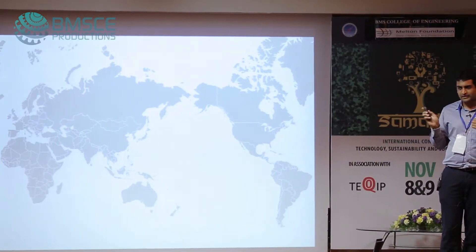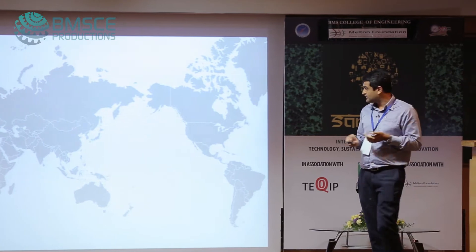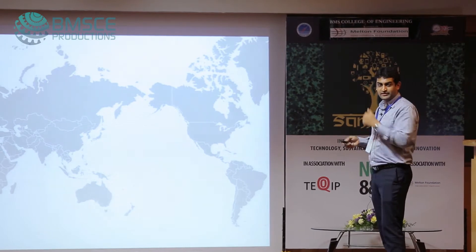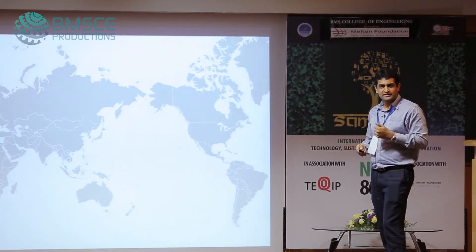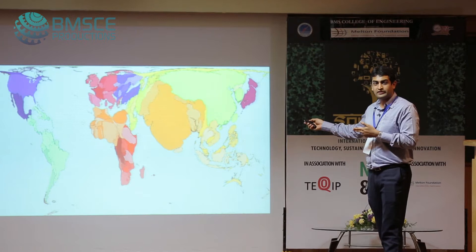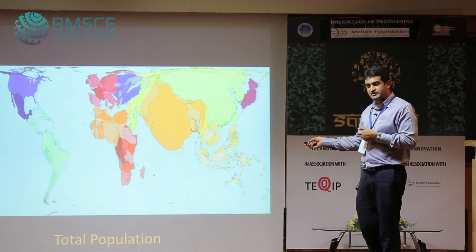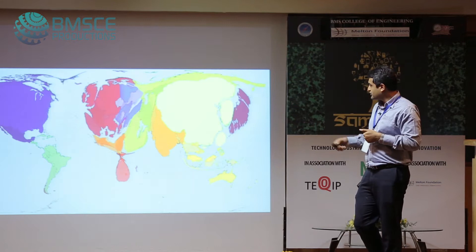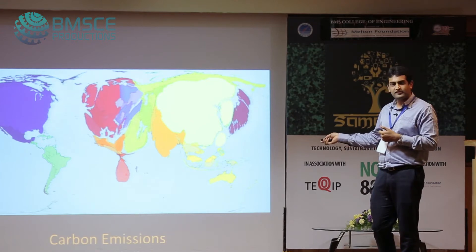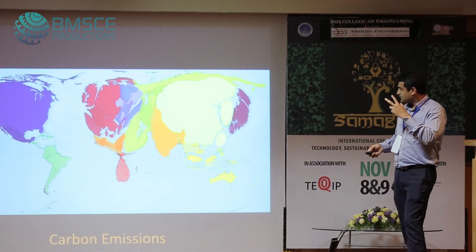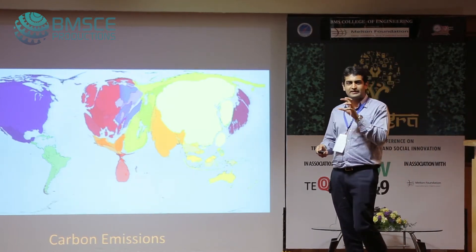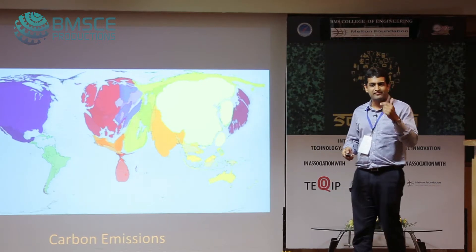This is the world map — it looks so nice when you see it, and many people want to travel to many countries. But there are different ways of looking at this map. You could look at it in terms of population, or in terms of carbon emissions. This is what creates the imbalance in different parts of the globe.